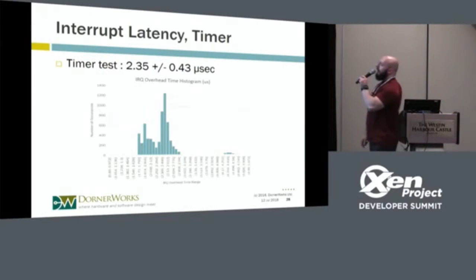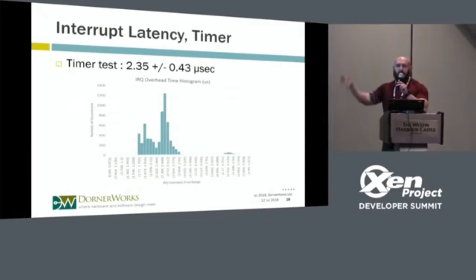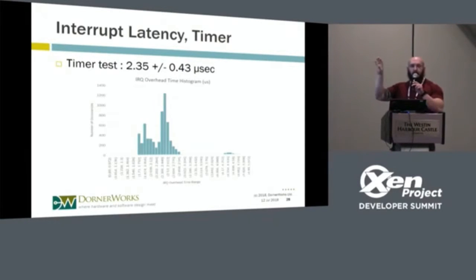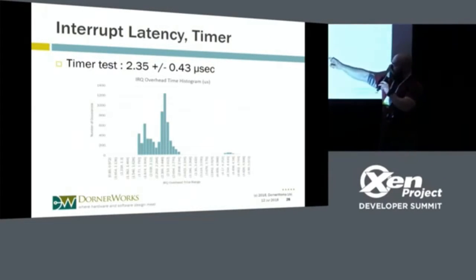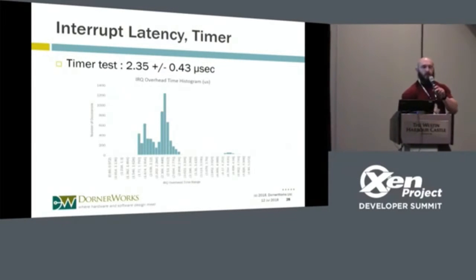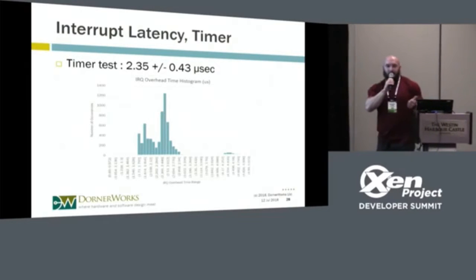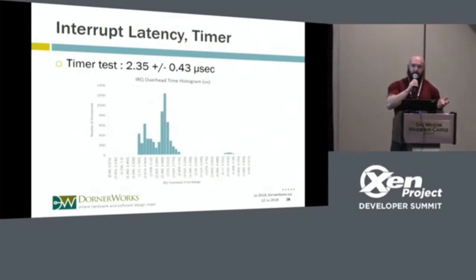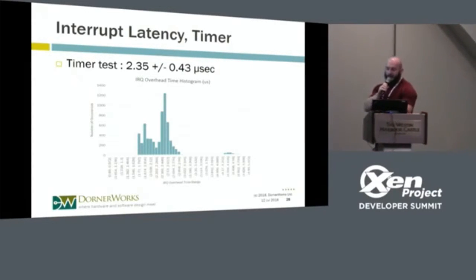From the trace measurements, we get about 2.35 microseconds of overhead that Xen provides — not the total interrupt processing time, just the amount Xen contributes that would not be present in a native environment. There are a couple of outliers where two IRQs arrived simultaneously and queued.